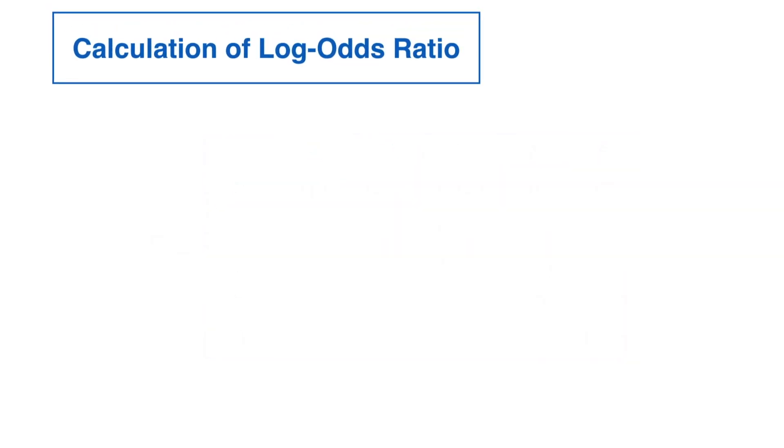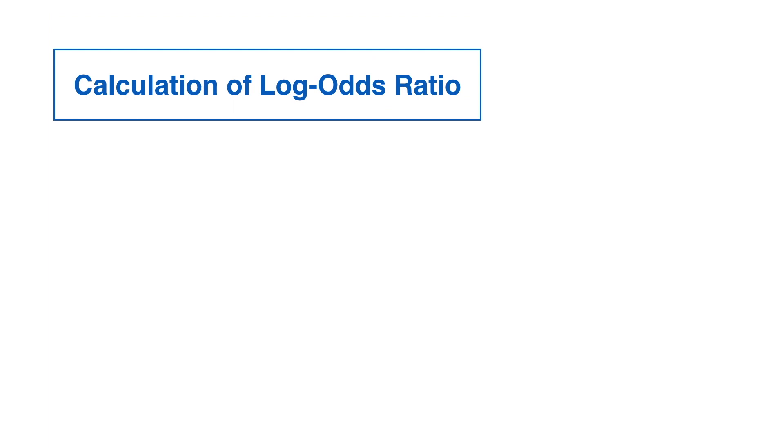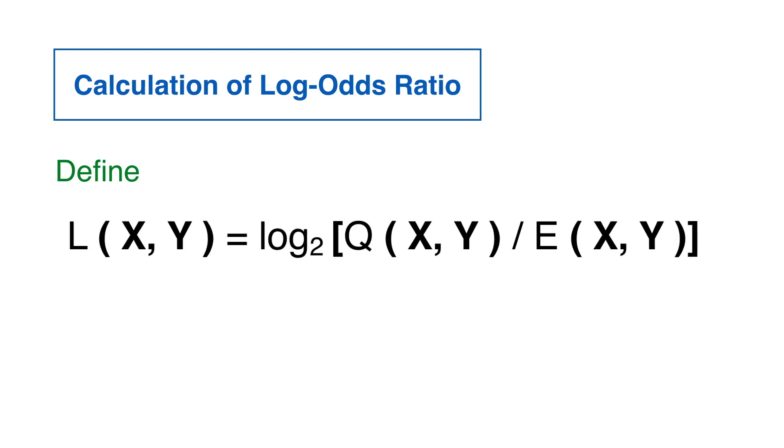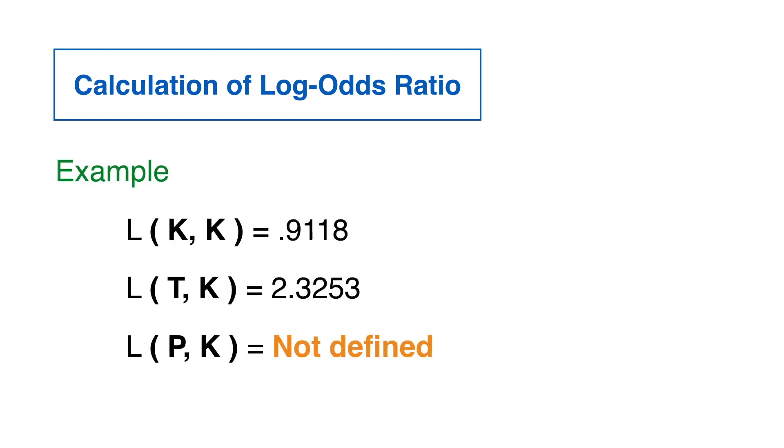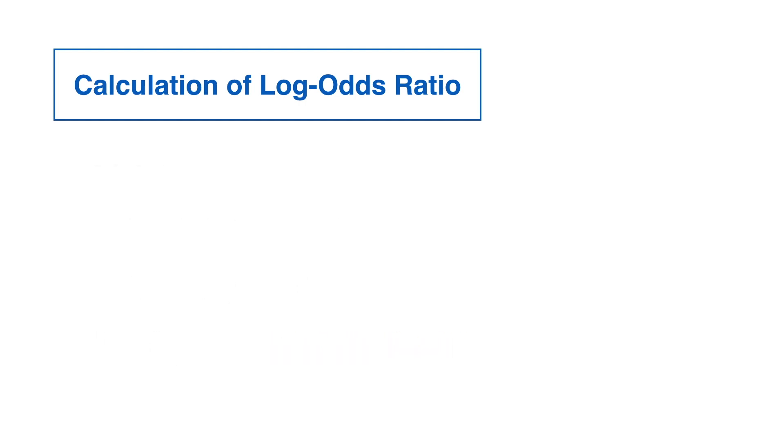The log odds ratio of two characters, x and y, is defined as the logarithm of the ratio between the frequency and the expected probability of x and y. In this case, we have taken logarithm in base 2, but base 10 or e may be used as well. Since the logarithm of zero is not defined, some entries in our log odds ratio matrix will not be defined. As remarked before, this does not happen in practice.